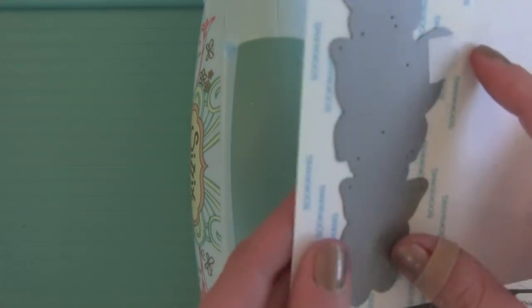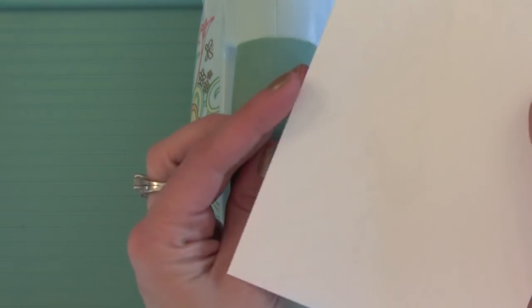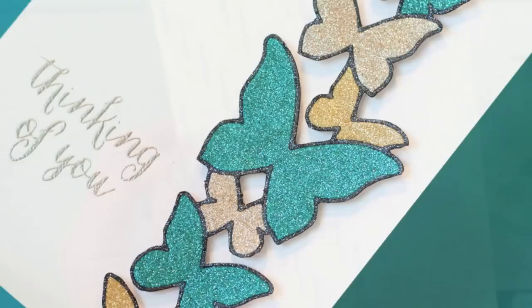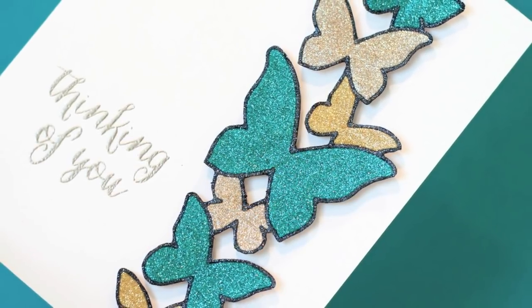You don't want to use any shims for this because we don't want this die to completely cut through those two layers. We want it to stay intact. So if it looks like this you're good to go. Don't worry about it. If parts of it cut through that's okay too. So let's go ahead and add the glitter.